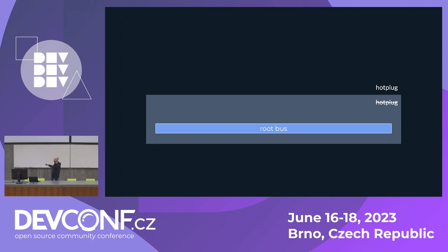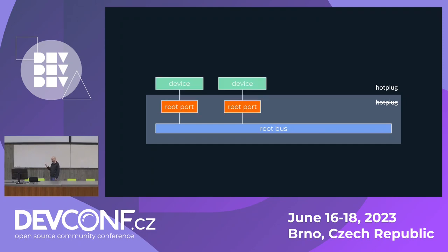In order to have hot plug working, you need to add additional PCI controllers called root ports. You plug those into the root bus — they themselves cannot be plugged or unplugged — but the devices connected to them can be. At that point you have hot plug. So here we have two devices that can be unplugged at runtime. If you want the ability to expand your virtual machine later, you create a few spare root ports and then you can do hot plug.